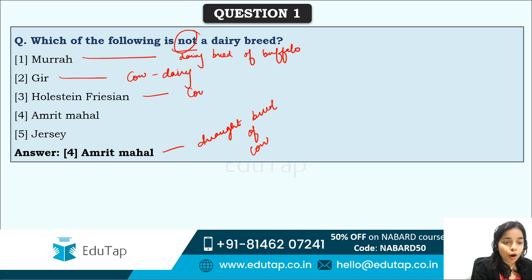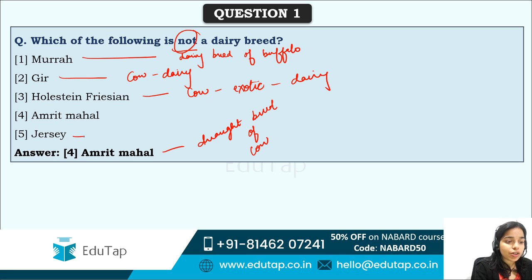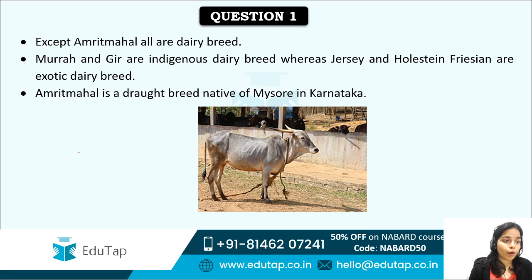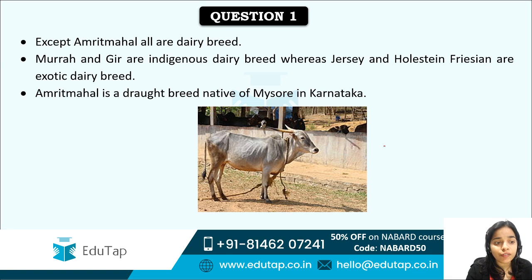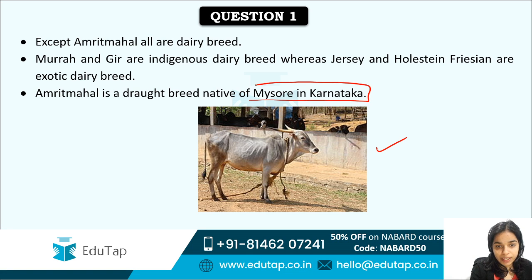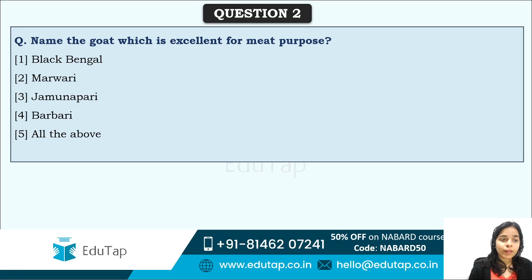Holstein Friesian is again a cow breed and it's an exotic dairy breed. Amrit Mahal is the drought breed of cow, while Murra and Gir are indigenous dairy breeds, and Jersey and Holstein are exotic dairy breeds. Amrit Mahal cows are natives of Mysore in Karnataka — please remember the origin of these cows.